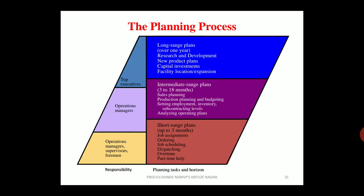Now we will look at the planning process. This diagram gives a brief overview of the different responsibilities of top executives, operational managers, and supervisors and foremen. On the left side, the responsibilities of each category are shown, and on the right side, the planning tasks and horizons are mentioned.